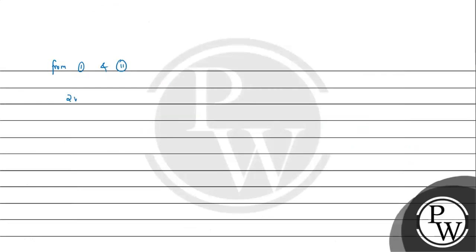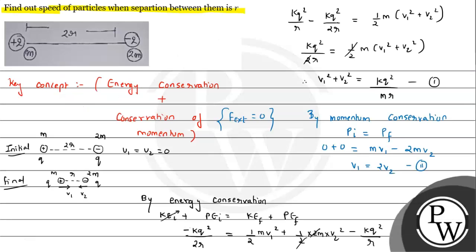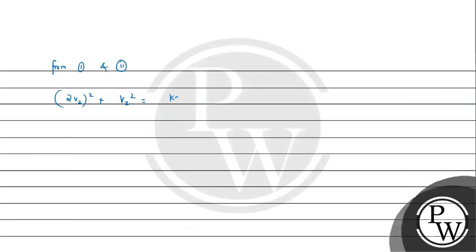From equations one and two, we have 4 v2 squared plus v2 squared equals k q squared upon m r. So 5 v2 squared equals k q squared upon m r. Therefore v2 equals the square root of k q squared upon 5mr.